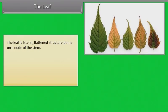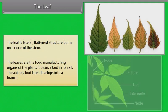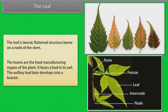The leaf is a lateral, flattened structure born on a node of the stem. The leaves are the food manufacturing organs of the plant. It bears a bud in its axle.